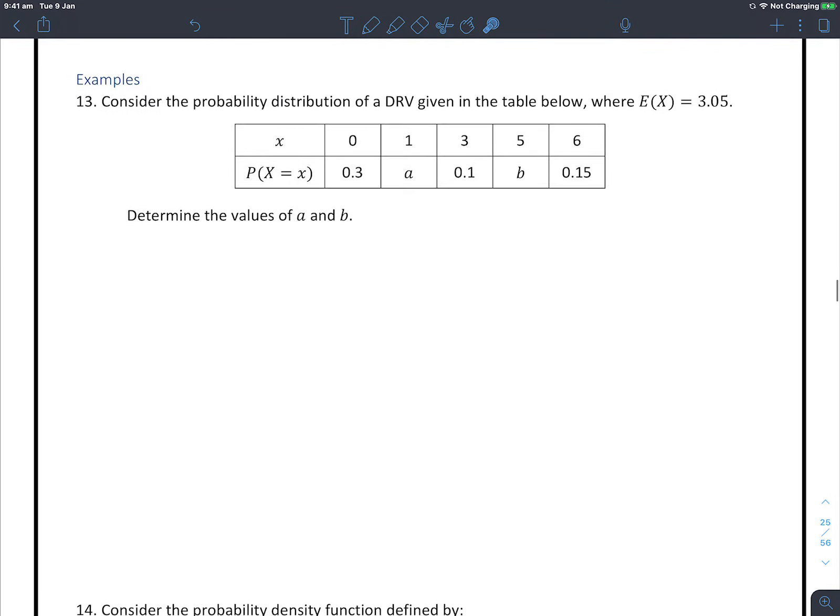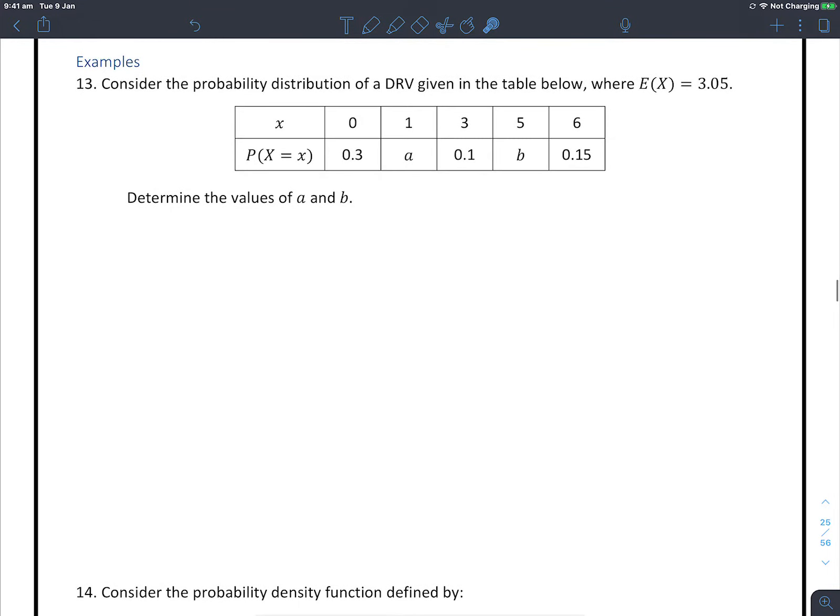So let's look at that in an example. Example 13: consider the probability distribution of a discrete random variable given in the table below where the expected value is 3.05.